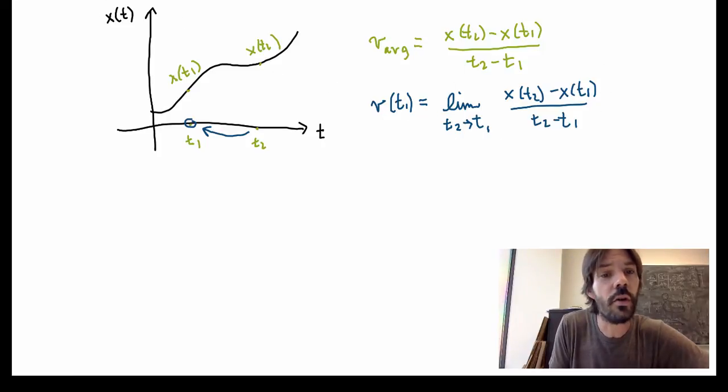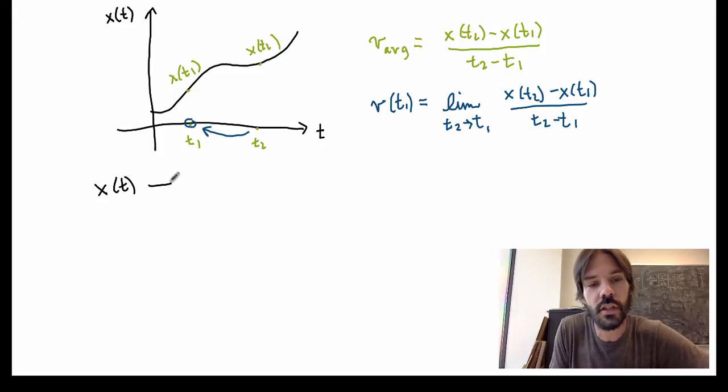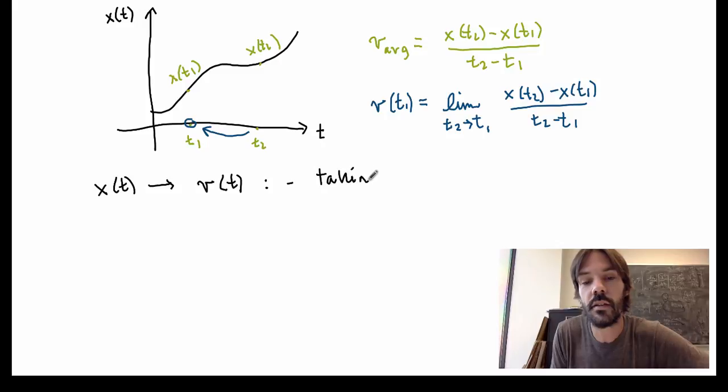Okay, this is pretty cool. But in fact, it's probably a lot cooler than you think. So this whole process of starting from a function, in this case the position function, and extracting another function, in this case the velocity, through this limiting process, is something that has a name. It's called taking the derivative.